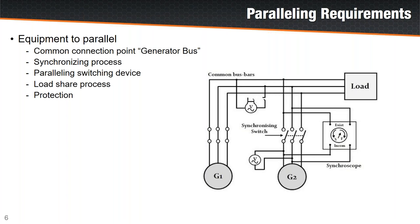Equipment necessary to parallel generators includes a common generator bus where all generators tie together, controls to align the phases — a process called synchronizing — and a switching device to connect the sources. Once two power sources are connected, we need to balance their power output. Finally, there needs to be protection so that if control functions don't work correctly, the generator is tripped offline and shut down.